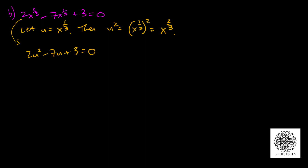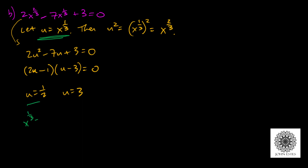Worst case I'd use the quadratic formula, but I think I can factor this one as 2u minus 1 times u minus 3. So I end up with u equals 1/2 and u equals 3. Remember, we're solving for x, not u. So let's get back into x language: that means x to the 1/3 equals 1/2, and x to the 1/3 equals 3.